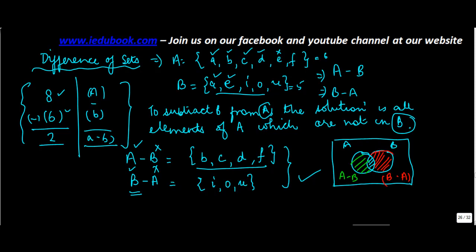So this red portion comprises of elements of B which are not in A. This comprises of elements of A which are not in B and the common area is what is left out.